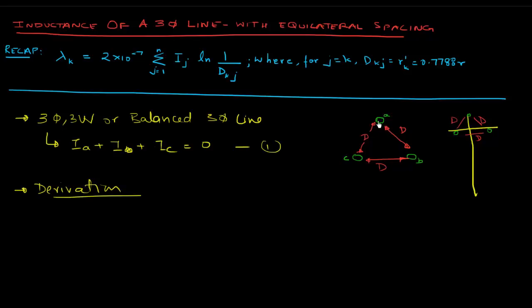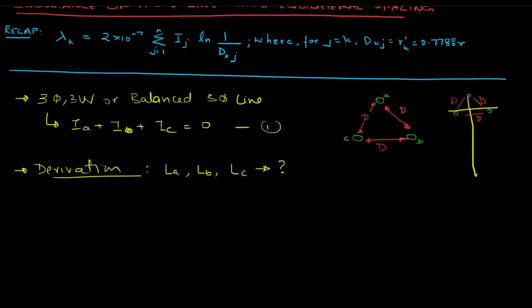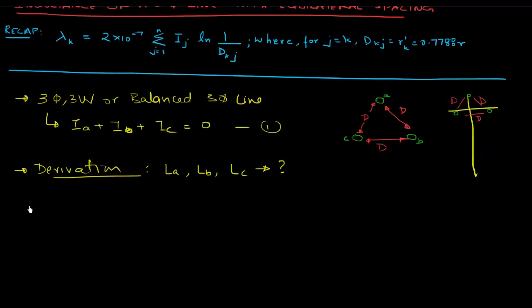So let's start our derivation now. So our interest is to see what's going to be the inductances in each of these lines. So we're going to derive for what is La, what is Lb, and what is Lc. Let's use this formula and start with the flux linkages for a. Now again, as I mentioned, this is nothing but a conductor in a group of conductors, so we can use this formulation. So if we use this, we're going to get 2 into 10 to the power minus 7, and then we get into the summation. So then we have Ia here, j is 1, so or rather a in this case, so it'll be Ia ln of Da to a, which would be r prime, so I'll substitute that.